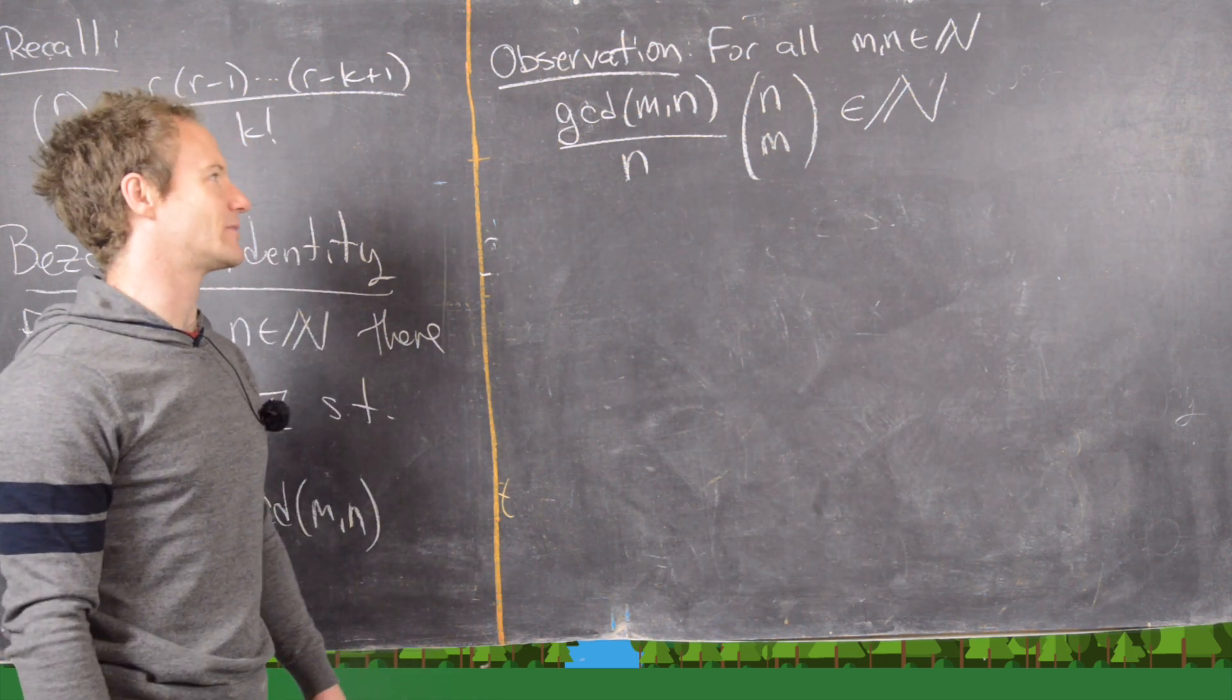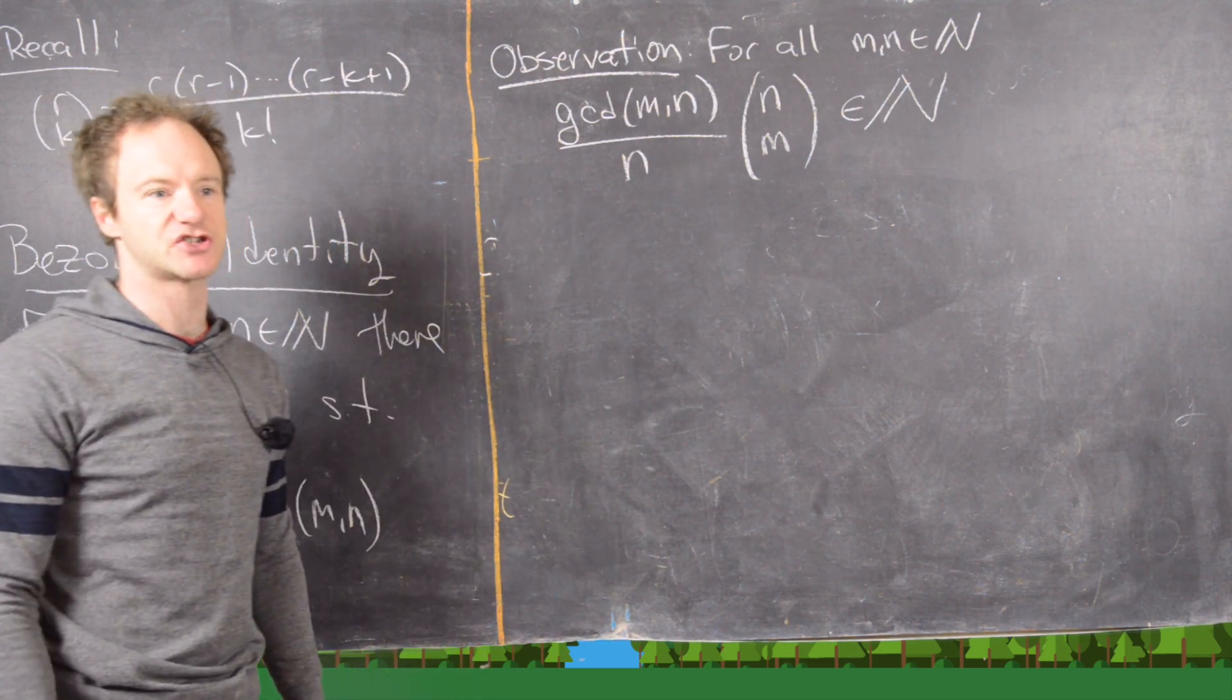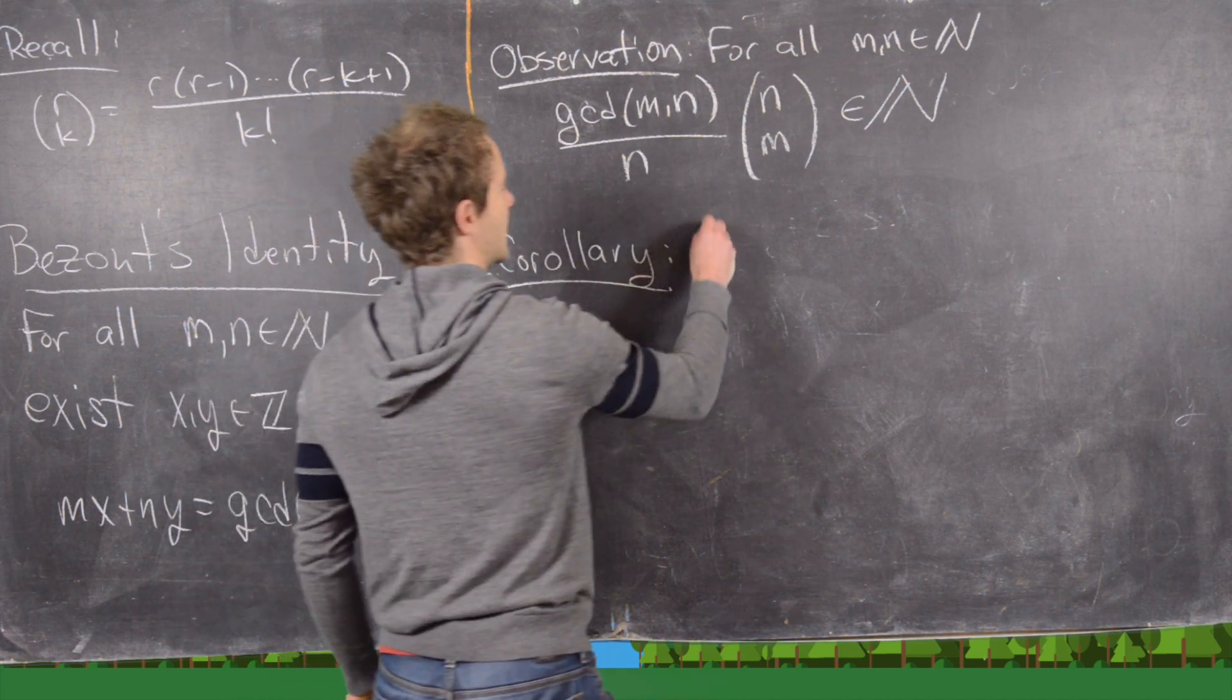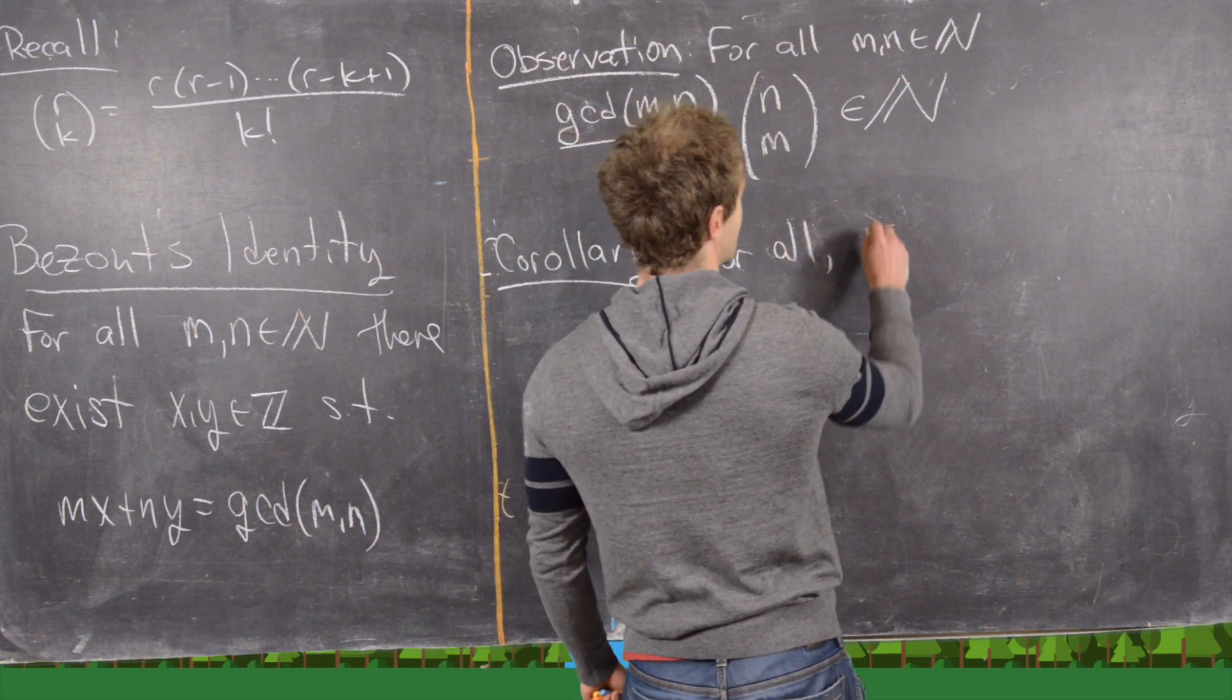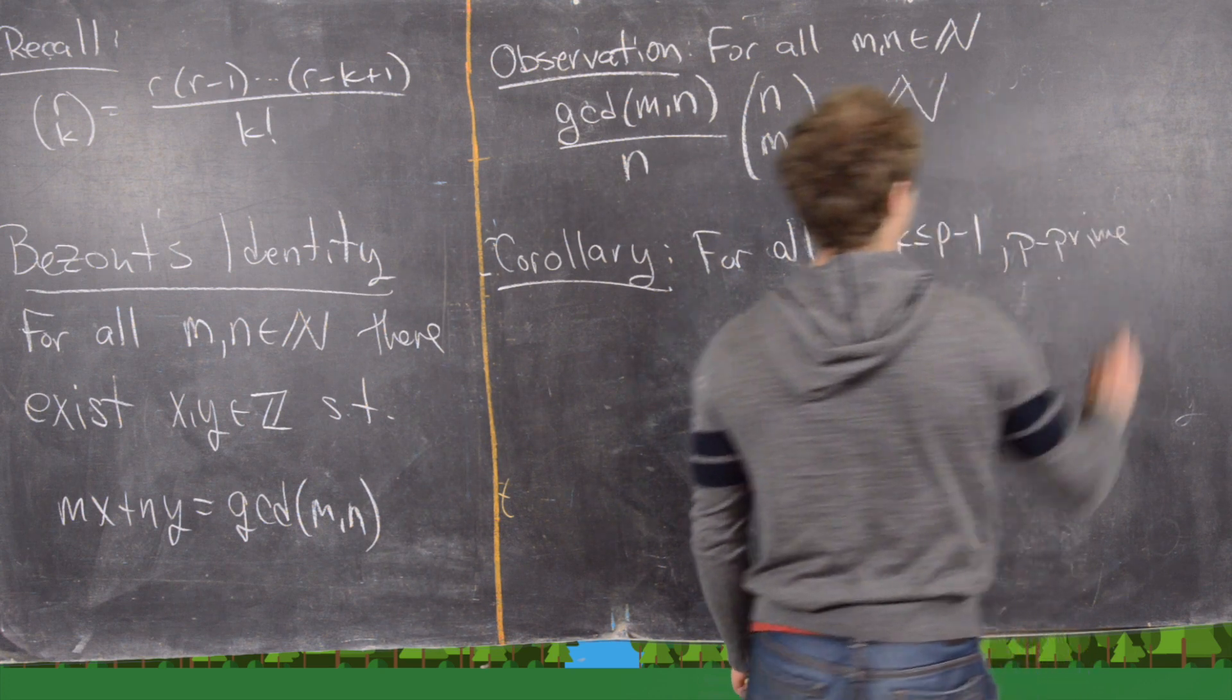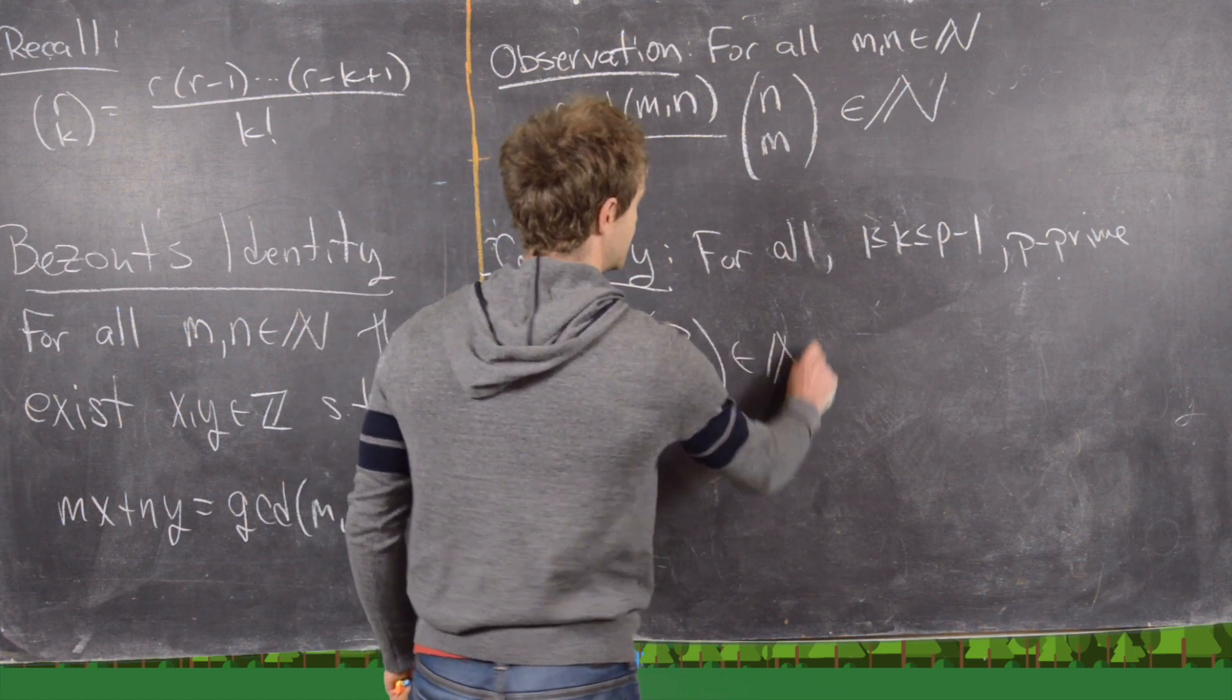So we just got done establishing this result that if we take this fraction, the GCD of m n over n, and multiply it to this binomial coefficient, we get a whole number. So now let's look at this corollary, which says that for all, maybe we'll say k between 1 and p minus 1, where p is a prime, we have that 1 over p times p choose k is a natural number.